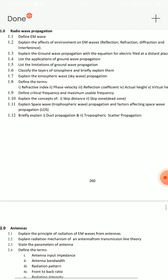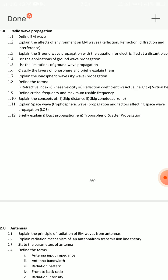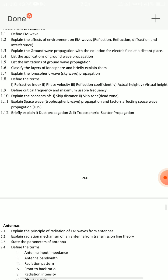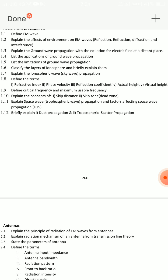Next, we'll talk about space wave and sky wave. Explain the ionosphere and sky wave propagation. Also, explain space wave propagation and the factors affecting space wave propagation. You should choose three topics: sky wave, space wave, and ground wave.